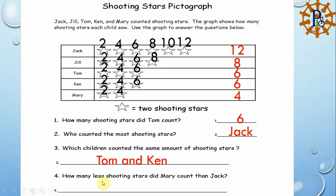The last question: how many fewer shooting stars did Mary count than Jack? When we see the word 'less' or 'more' we subtract. Mary counted 4 and Jack counted 12, so we calculate 12 minus 4, which equals 8. This is our lesson for today — lessons 111 to 113 covering bar graphs and pictographs.